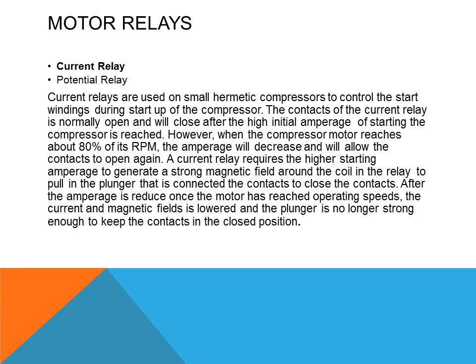The current relay is used on smaller hermetic compressors to control the start windings during startup. Its contacts are normally open and will close after the high initial starting amperage is reached. When the compressor motor reaches about 80% of its RPM, the amperage decreases and the contacts reopen. The current relay requires high starting amperage to generate a strong magnetic field in the coil to pull in the plunger and close the contacts. Once the motor reaches operating speed, the reduced current and magnetic field can no longer hold the contacts closed, so the relay opens.